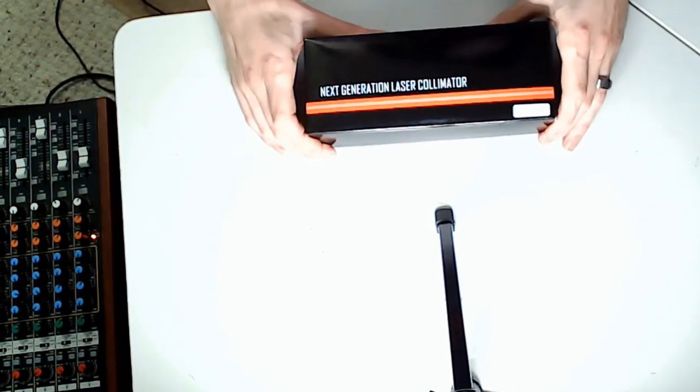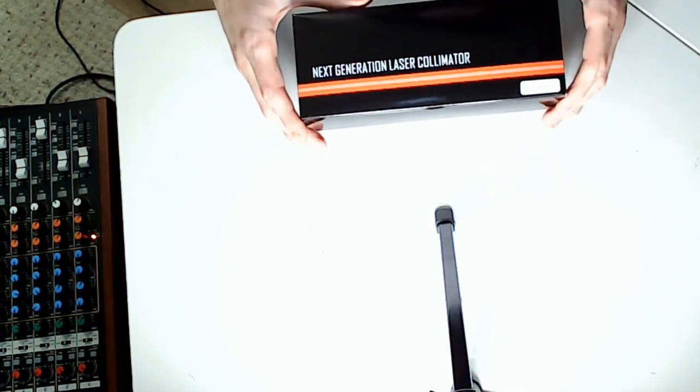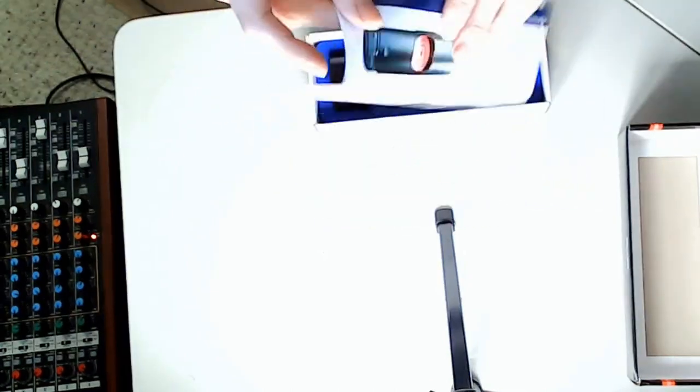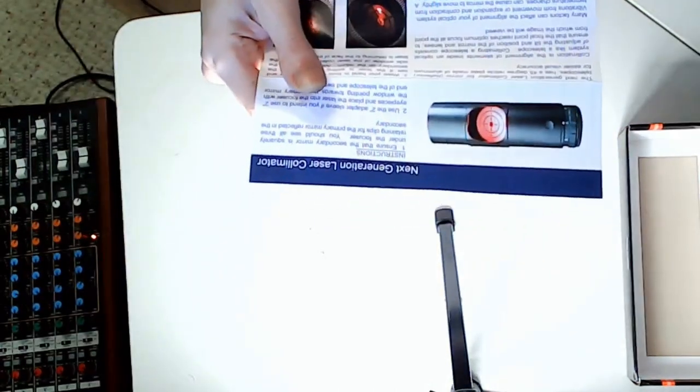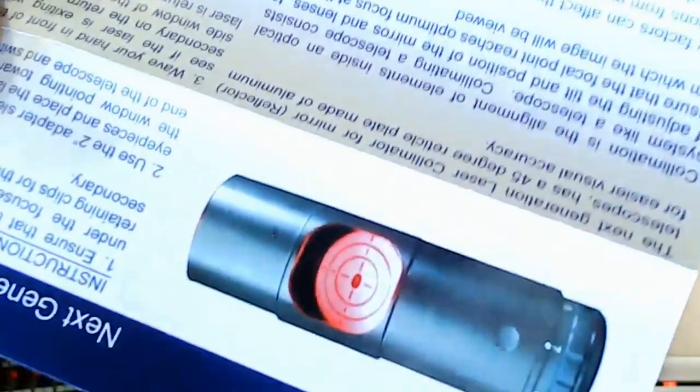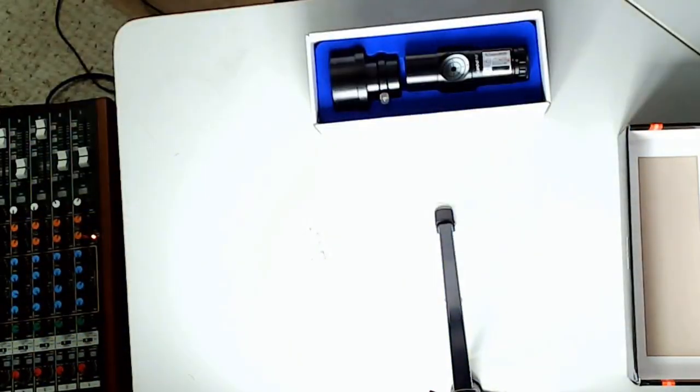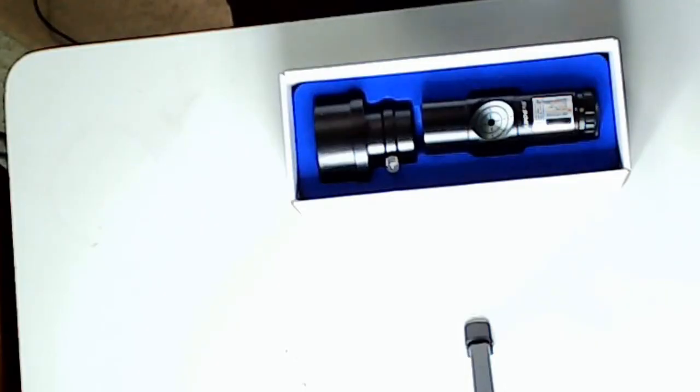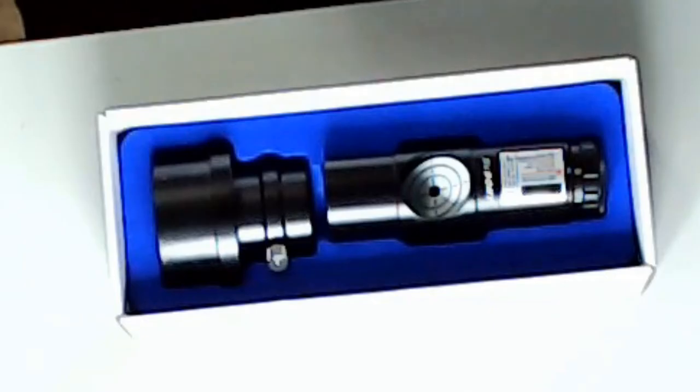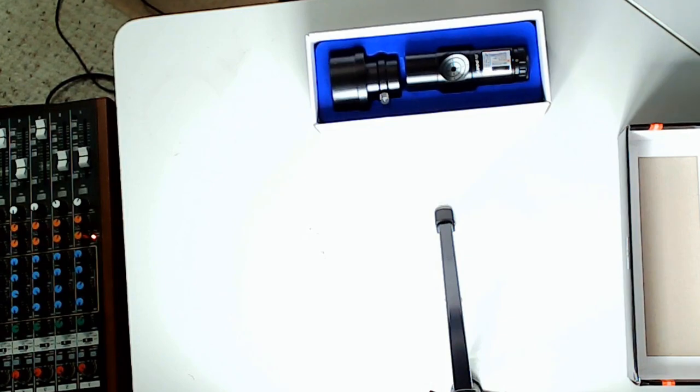So let's open it up and see what's inside. First, it comes with this nice, easy to understand instruction manual. That's cool right off the bat. A lot of times I'll get stuff off Amazon and they won't even come with an instruction manual, and these instructions are easy to follow. So if you've never collimated before, it's going to help you tremendously.